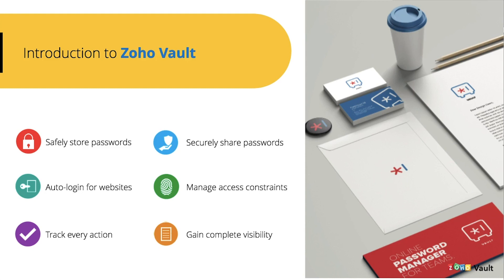You can even secure your critical documents and notes with Vault. Sharing passwords with Vault is also easy and extremely secure because you can share your passwords with one of four different permissions. One-click login privilege restricts users from viewing passwords in plain text and allows them only to log in and access accounts without viewing passwords. There are also view and edit permissions, and a manage permission which allows you to give complete control of a password to a colleague.